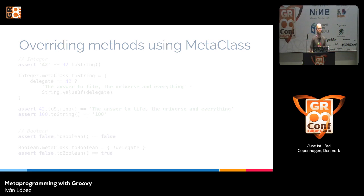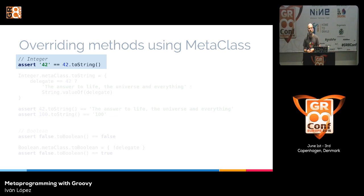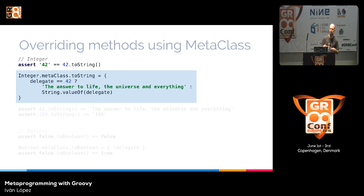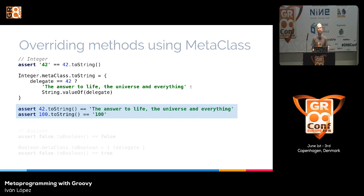We can also override methods using the meta-class. First, we can check that the string '42' equals 42.toString(). But as you probably know, 42 is also the answer to life, the universe, and everything. So we can override the toString implementation of the Integer class: if the value is 42, we return 'the answer to life, the universe, and everything'; otherwise, we return the normal string value. Now, 42.toString() returns that phrase, while other numbers return their expected value.